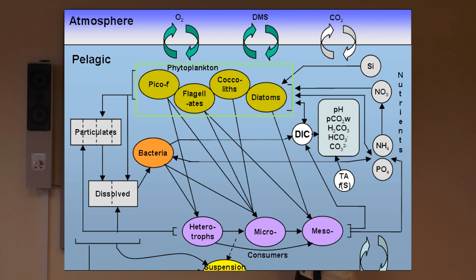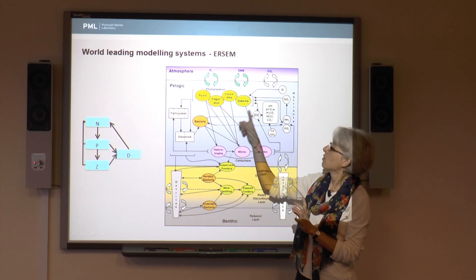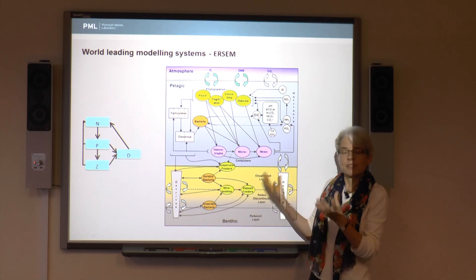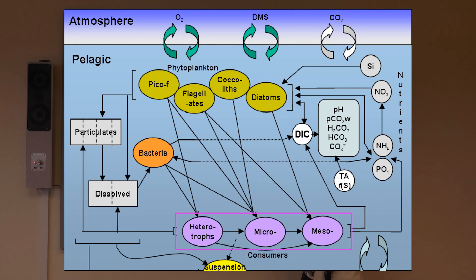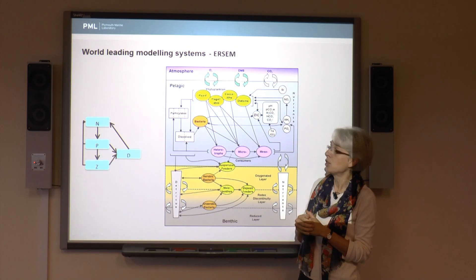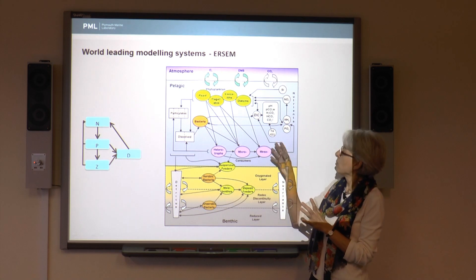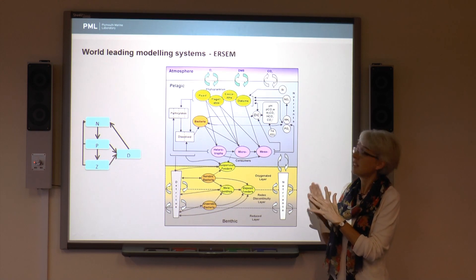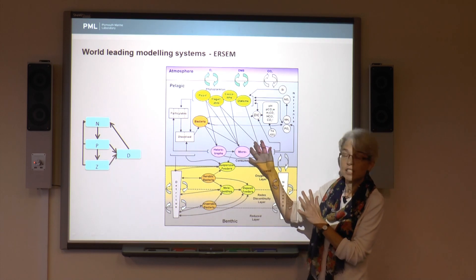For example, we've got diatoms. They build silicon skeletons, so we've got silicon in the model to represent that process. We've got three kinds of zooplankton — three different lifestyles of zooplankton represented here. We've put bacteria into the model, because they do things that neither the phytoplankton nor the zooplankton do. And we're not just on one kind of nutrient cycling around. This model enables us to calculate how much carbon, silicon, nitrate, and phosphate there is in the model at any one time, in different parts of the ecosystem.